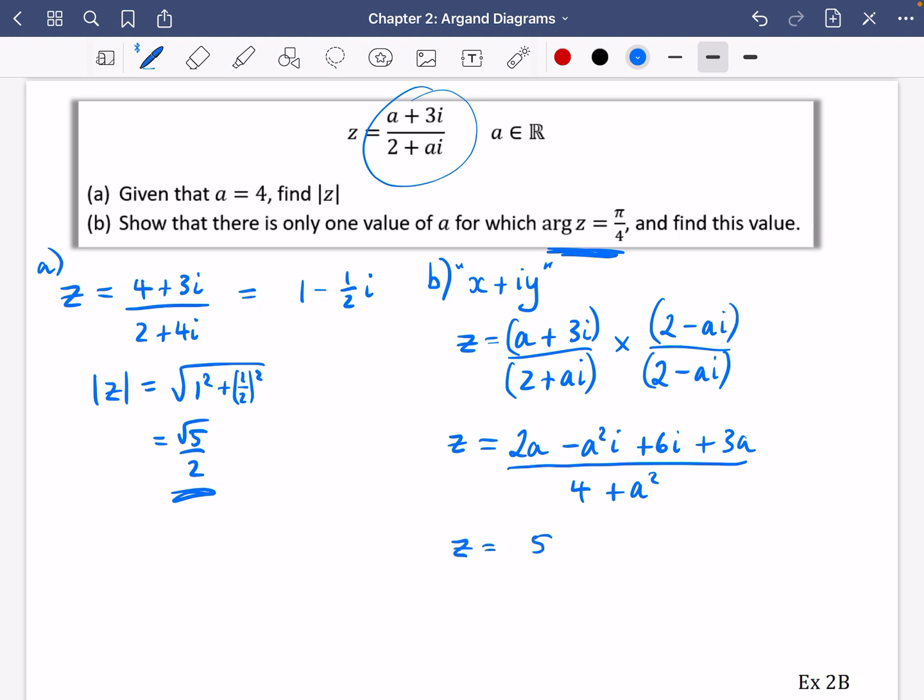So let's tidy that up a little bit more. In the numerator, we have got 5a. I'm just going to factorize out the i here. So I will have 6 minus a squared i. And each of these bits is going to be divided by 4 plus a squared. But I kind of prefer it as just 5a over 4 plus a squared, the real part, and 6 minus a squared over 4 plus a squared i.